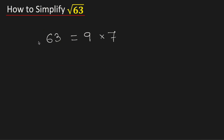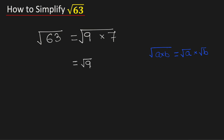Now take the square root on both sides. Using the property that the square root of a times b is equal to root a times root b, this square root can be written as square root of 9 times square root of 7.